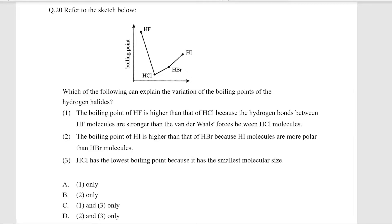2020 question 20: refer to the sketch. You can see the boiling points of four different molecules. Which of the following can explain the variation of the boiling points of the hydrogen halides? Option one: the boiling point of HF is higher than that of HCl because HF has hydrogen bonds and HCl has Van der Waals forces.